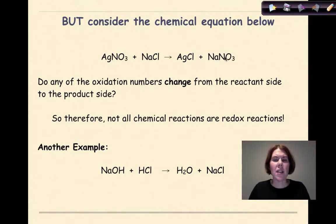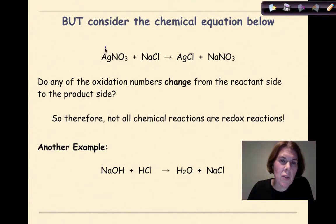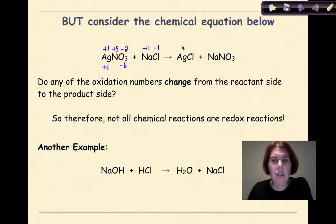Now let's look at this chemical equation right here and assign oxidation numbers to all the elements. So I know that silver is going to be plus one. Oxygen is going to be minus two. Minus two times three gives me negative six. I'm going to bring down the plus one. Therefore, the nitrogen has to be plus five. I go to sodium and chlorine. Sodium is plus one. Chlorine is minus one. Now over to the product side. Ag is plus one. Cl is minus one.